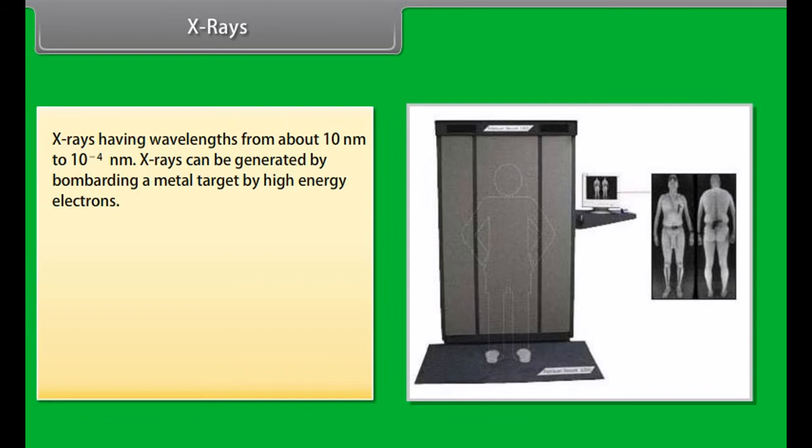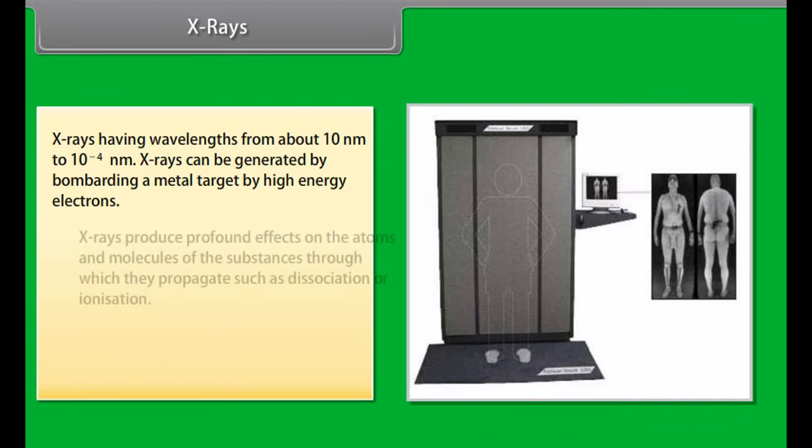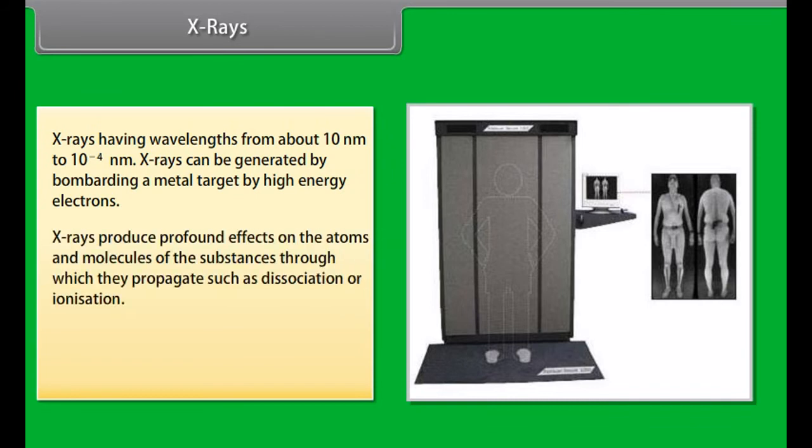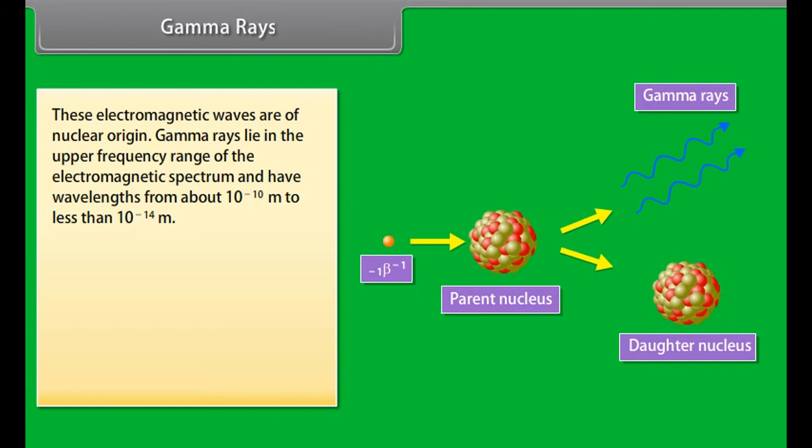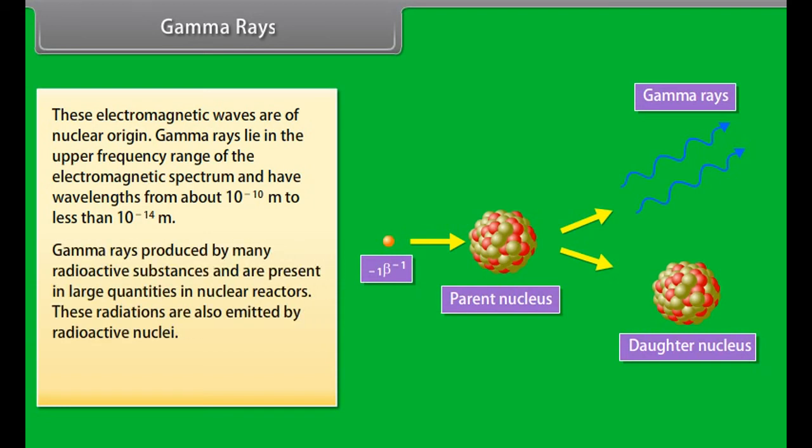Ultraviolet rays. This region covers from 400 nm down to 0.6 nm nearly. These waves are produced by atoms and molecules in electrical discharges. The sun is a very powerful source of ultraviolet radiation and it is this factor which is mainly responsible for suntans. But most of it is absorbed in the ozone layer. UV light in large quantities has harmful effects on humans. Welders wear special glass goggles to protect their eyes from large amount of UV produced by welding arcs. UV rays are used in eye surgery and UV lamps are used to kill germs in water purifiers.